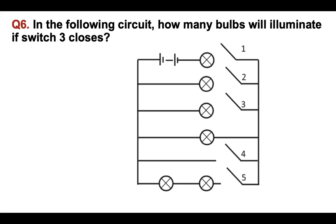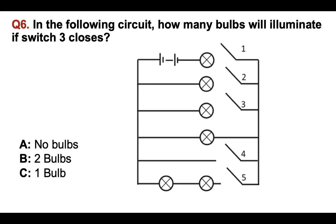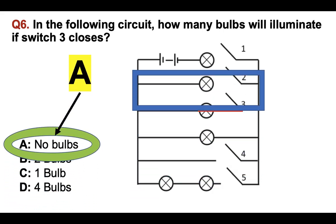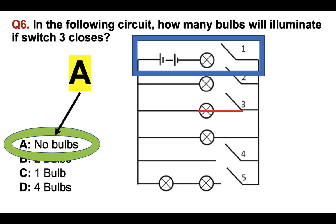Let's have a look at one that's slightly harder and a little bit different. In the following circuit, how many bulbs will illuminate if switch three closes? A, no bulbs; B, two bulbs; C, one bulb; or D, four bulbs. The answer is no bulbs. The reason being, at the top there, switch one has to close for anything to happen to make the circuit. It has to close to make the circuit — a lot of people would get that wrong.